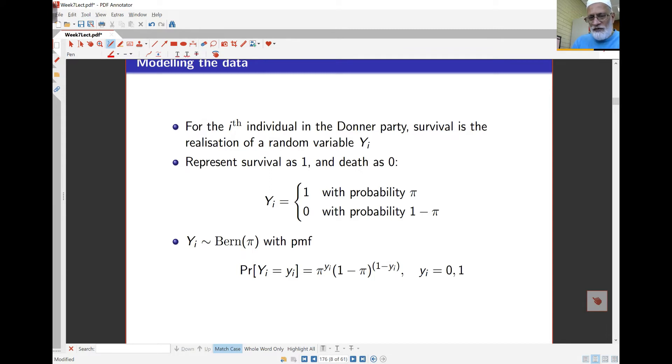When yi is 0, meaning the person has died, you can see that disappears and I've just got 1 - πi—this is equal to 1 when yi is 0. On the other hand, if yi is 1, this is now 0, so this becomes 1, and I get πi. So you can see it does give the correct probabilities as expected.